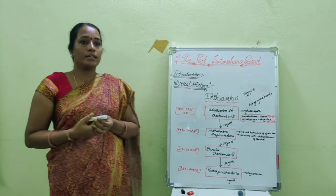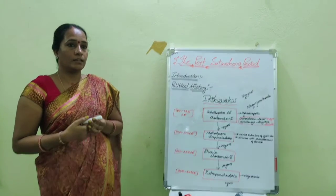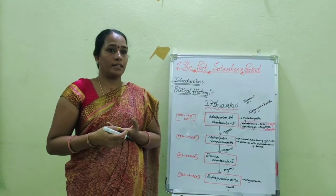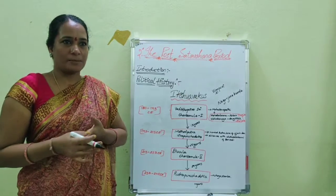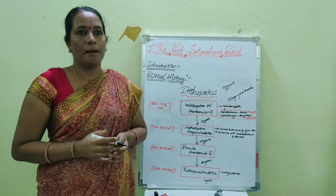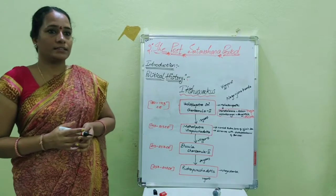Thus, the Ikshvaku dynasty came to an end in Telangana as Pallavas occupied control at Krishna, Guntur, and Vijayapuri by Vasusena in the 3rd century.